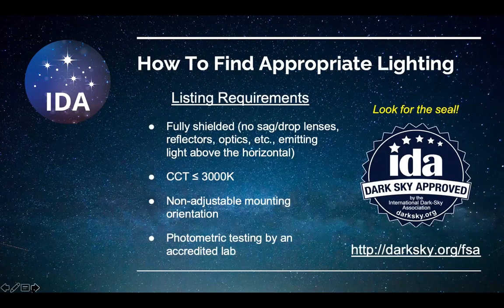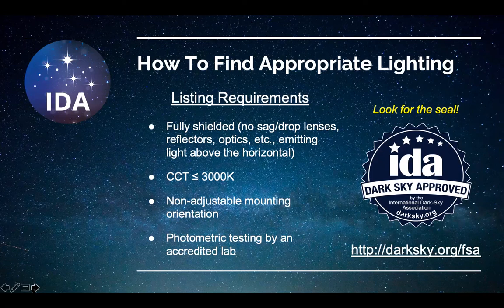When you're creating lighting plans for your projects, the best way to find appropriate lighting that takes this idea into account is to look at our Fixture Seal of Approval program, accessible at the link in the lower left. We screen and vet different lighting products from different manufacturers according to a series of listing requirements. These are all elements of what we think are good lighting design that will help keep the light where it's needed and prevent it from going where it is not. If you see our service mark on a product package or data sheet, it meets these criteria and, when thoughtfully applied in a lighting design, will contribute to preventing light trespass and therefore eliminating the potential for nuisance.